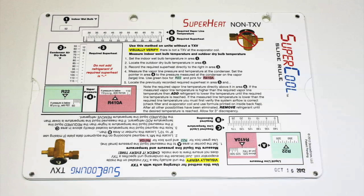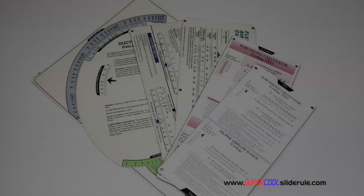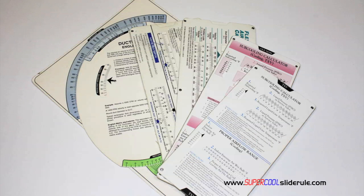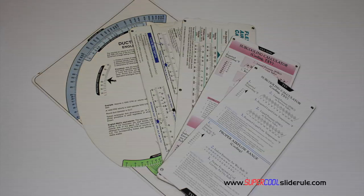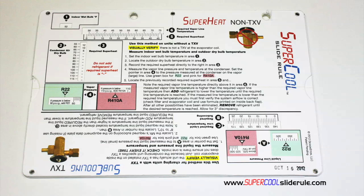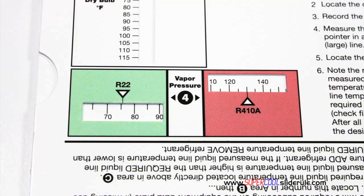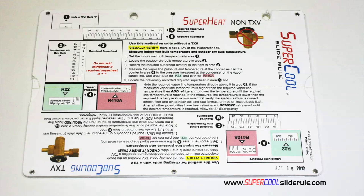Hello, I would like to take a minute to introduce you to the coolest tool in the HVAC industry. Historically, technicians have carried four or five different slide rules — one for R22, one for R410A, one for metal duct sizing, one for flexible duct sizing, and yet others for diagnostics or troubleshooting. Thankfully those days are gone. This one tool will allow you to charge a system with R22 or R410A in either the superheat or subcooling method.